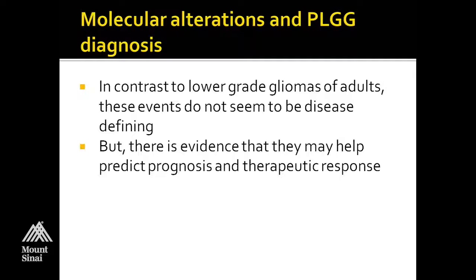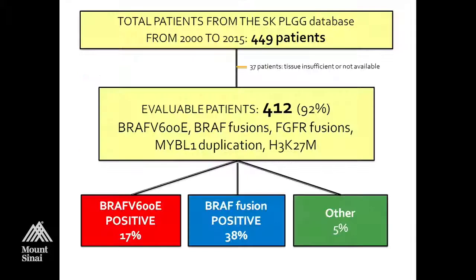In our series at SickKids from 2000 to 2015 of about 450 patients with low-grade glioma, after excluding 37 due to insufficient tissue, we were able to evaluate 412 — 92% of the cohort. We looked at BRAF V600E, all BRAF fusions, FGFR fusions, MIB-L1 duplications, and histone mutations. Overall, 38% of our low-grade gliomas are BRAF fusion positive, and 17% show V600E.